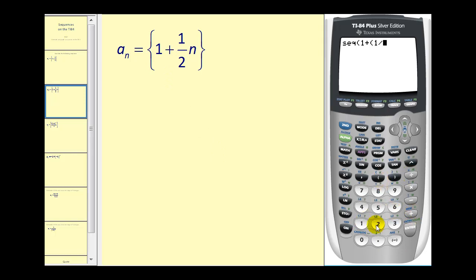Type in the formula. So we have one plus one-half n, comma n, comma one, comma, however many terms we want. Let's go ahead and generate the first ten terms again. Close parenthesis, press enter, and there are the terms. We've pressed the right arrow. We can see more and more terms. Notice how each term increases by one-half, and then it stops. It stops at six, because when n is ten, we have one plus one-half times ten, or one plus five, would give us six.